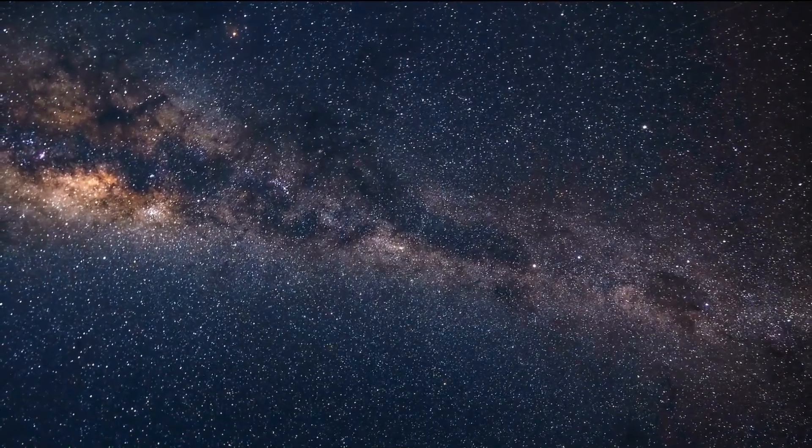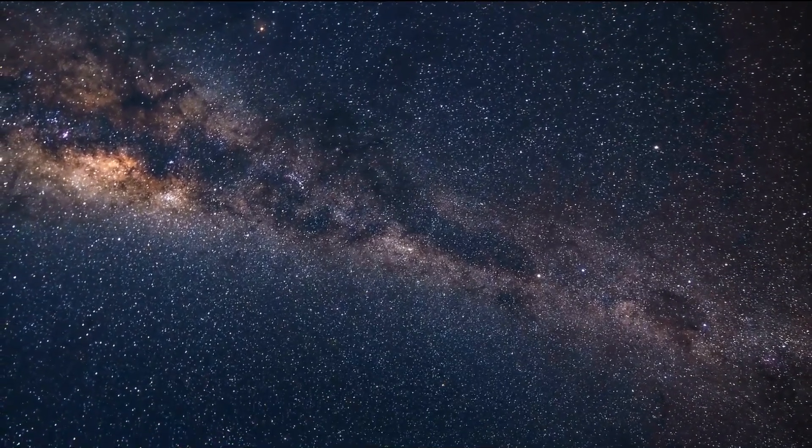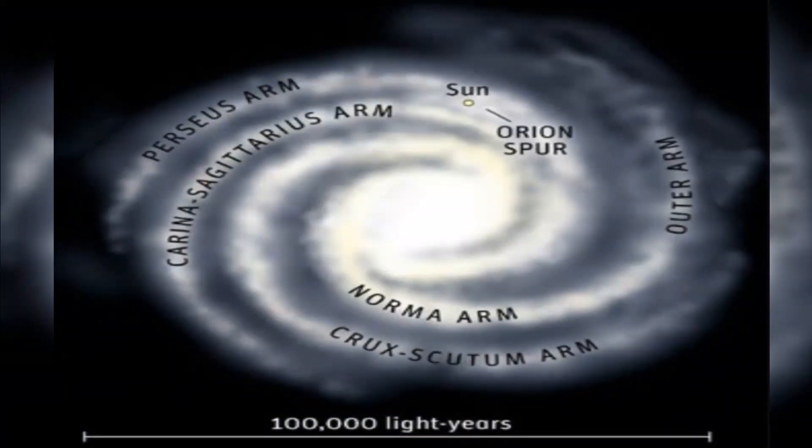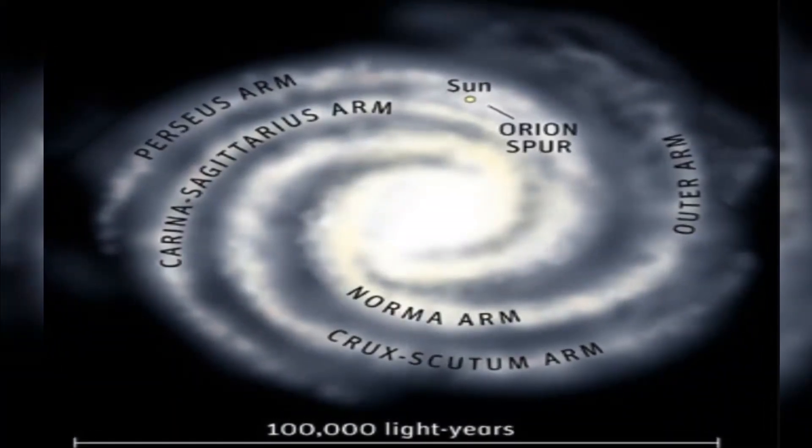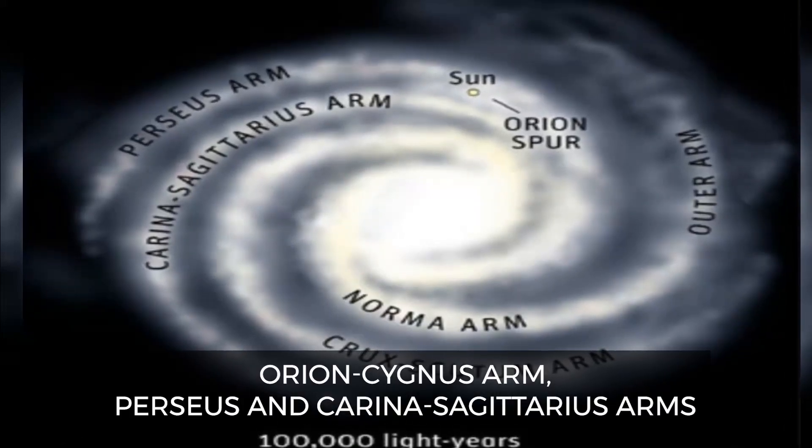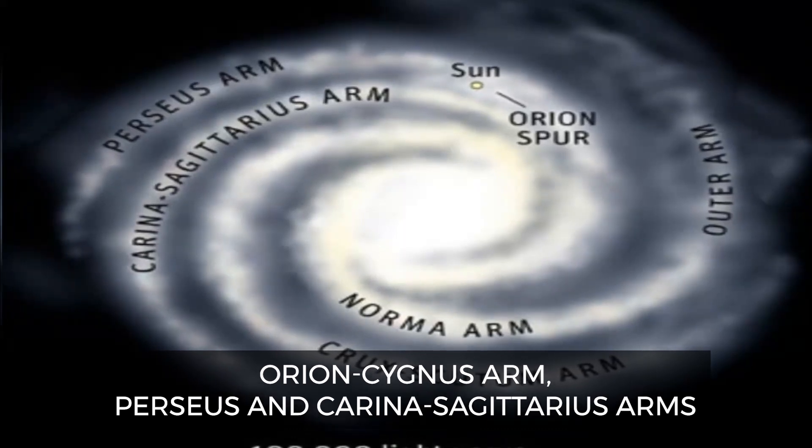If the center of the Milky Way were a city, we would be living in suburbia, about 25,000 to 30,000 light-years from the city center. We find ourselves nestled in one of the smaller neighborhoods, the Orion Cygnus Arm, sandwiched between larger Perseus and Carina Sagittarius arms. If we were to travel inwards towards the city center, we would find the Scutum Centaurus and the Norma arms.